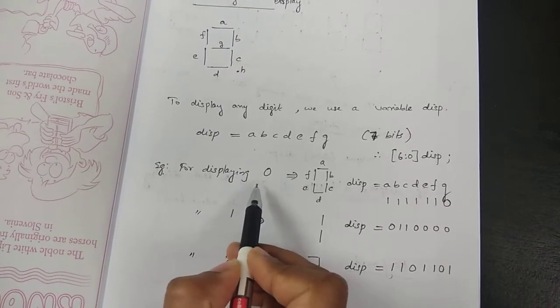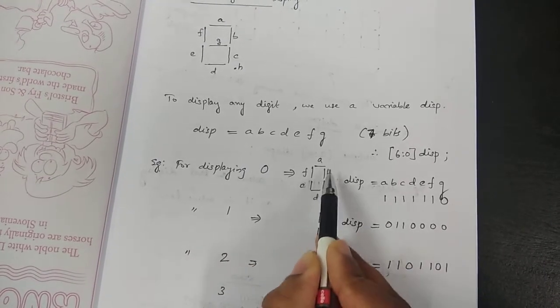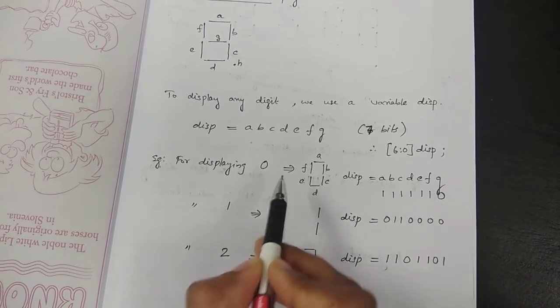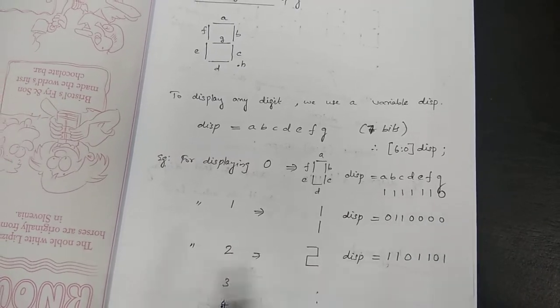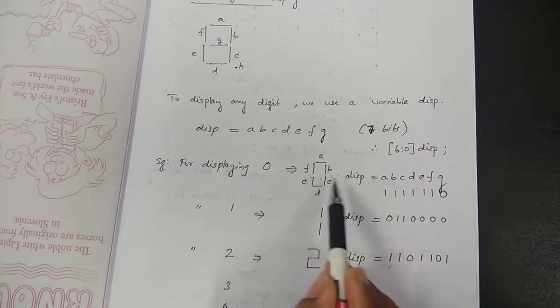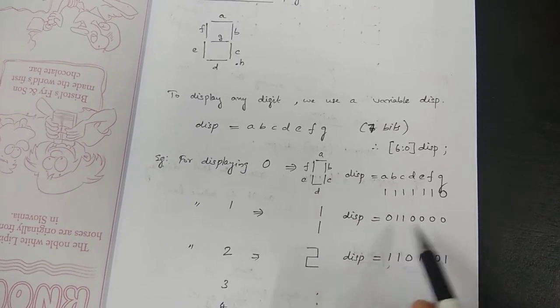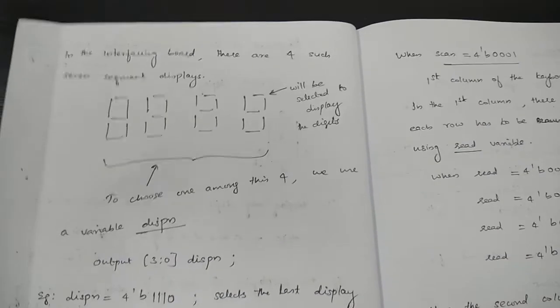To display the digit zero, all segments a, b, c, d, e, f except g should be given a one. Similarly, for displaying one, you activate segments b and c only — b and c will be given one and all other segments will be given zero. The same way we can write for two, three, up to f.